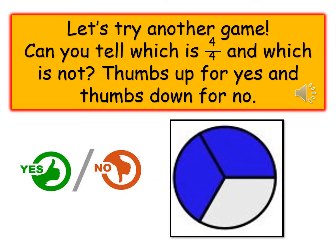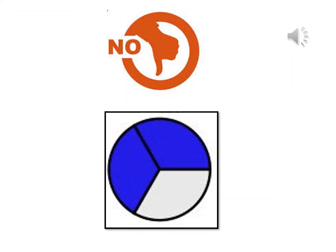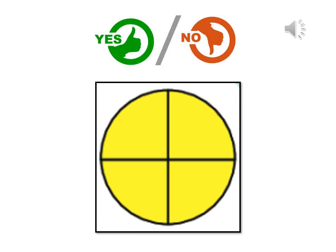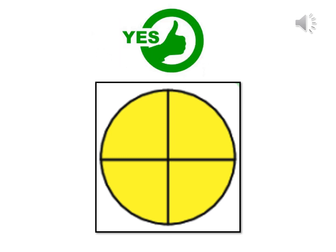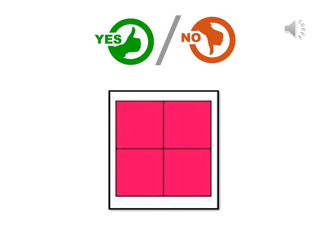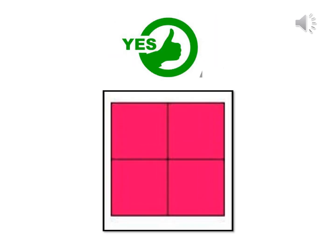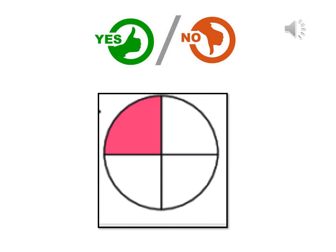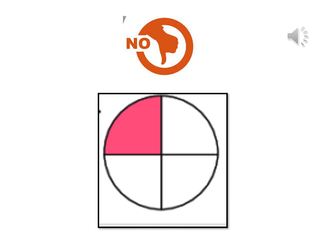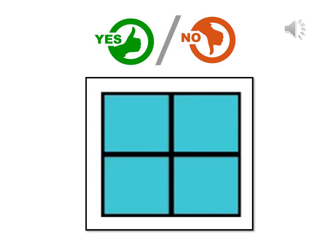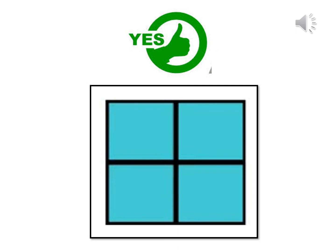Let's try another game. Can you tell which is four quarters and which is not? Thumbs up for yes and thumbs down for no. No, this is not four quarters. Is this four quarters or not? Yes, it is four quarters. Is this four quarters or not? Is this four quarters or not? Yes, it is four quarters.